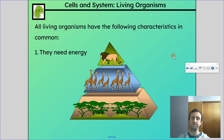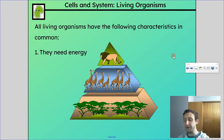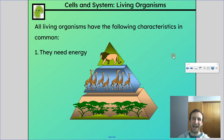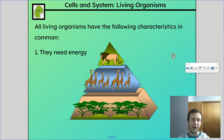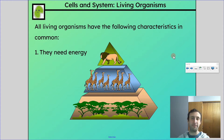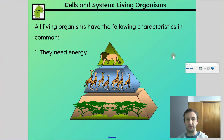We're going to start off by talking about what all living things have in common. The first thing is that they need energy — different sources for different living things. If you look at a plant, it's getting energy from the sun, which we're going to talk about a little bit later.